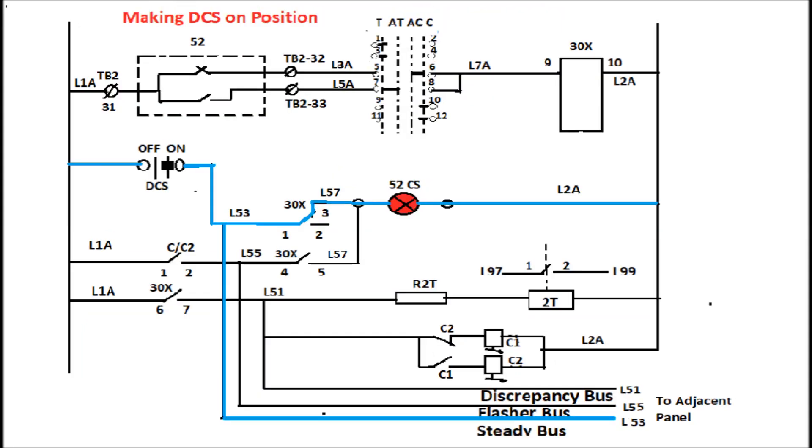During normal condition, if we make the DCS switch in on position, the steady bus will energize and lead to on of all the lamps associated with the voltage level of the panels.